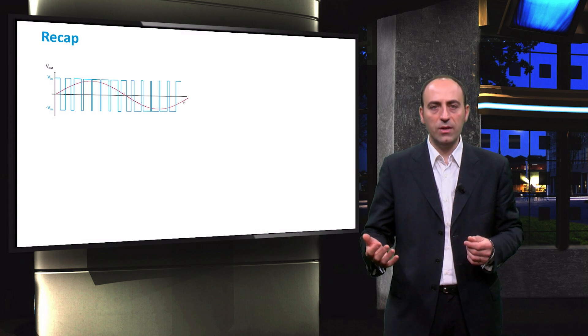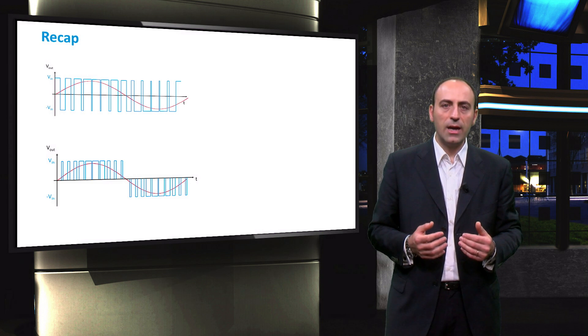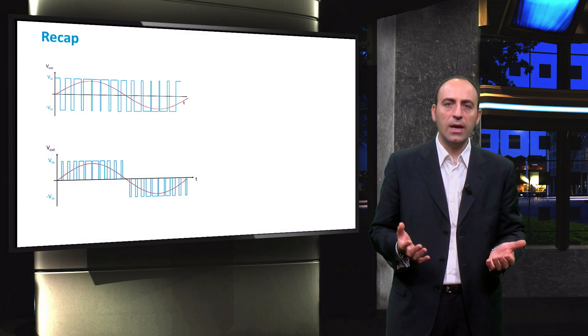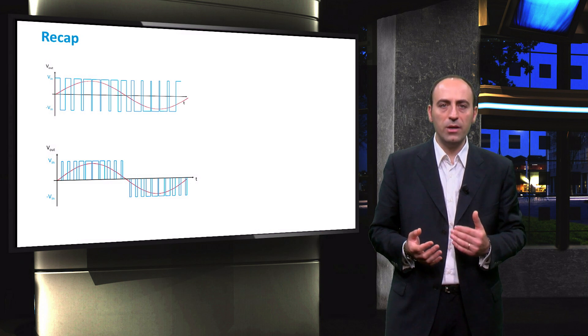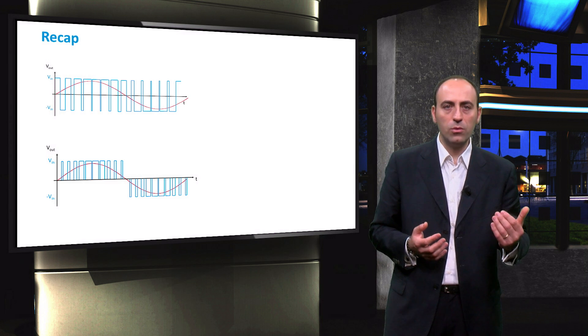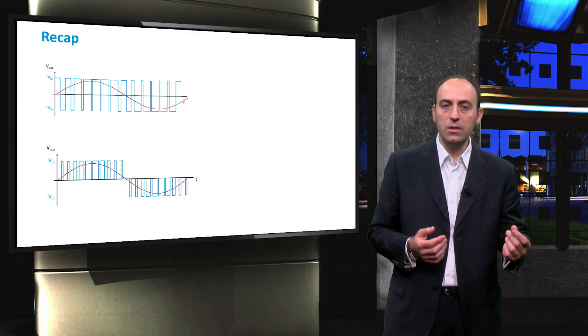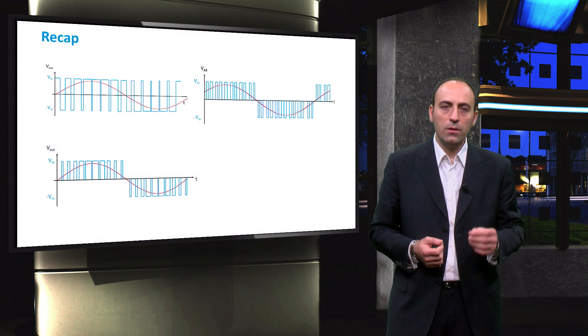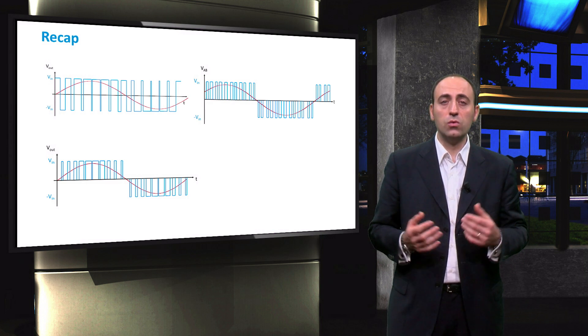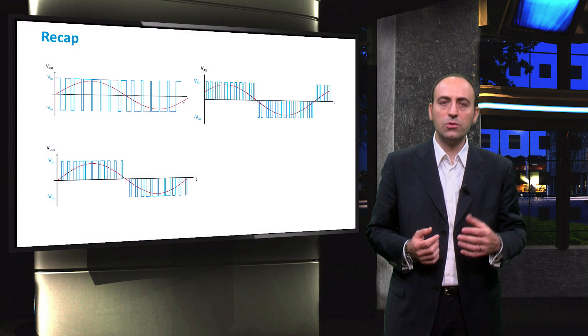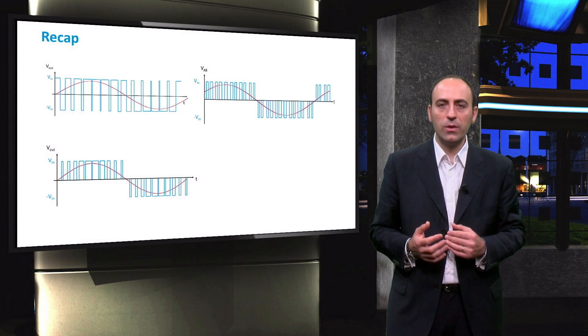The bipolar type acts simultaneously on the four switches of the inverter and gives a signal that goes from plus V input to minus V input. The unipolar type uses two input signals and draws in the first half period a signal that goes from V input to zero, and in the second half period a signal that goes from zero to minus V input.